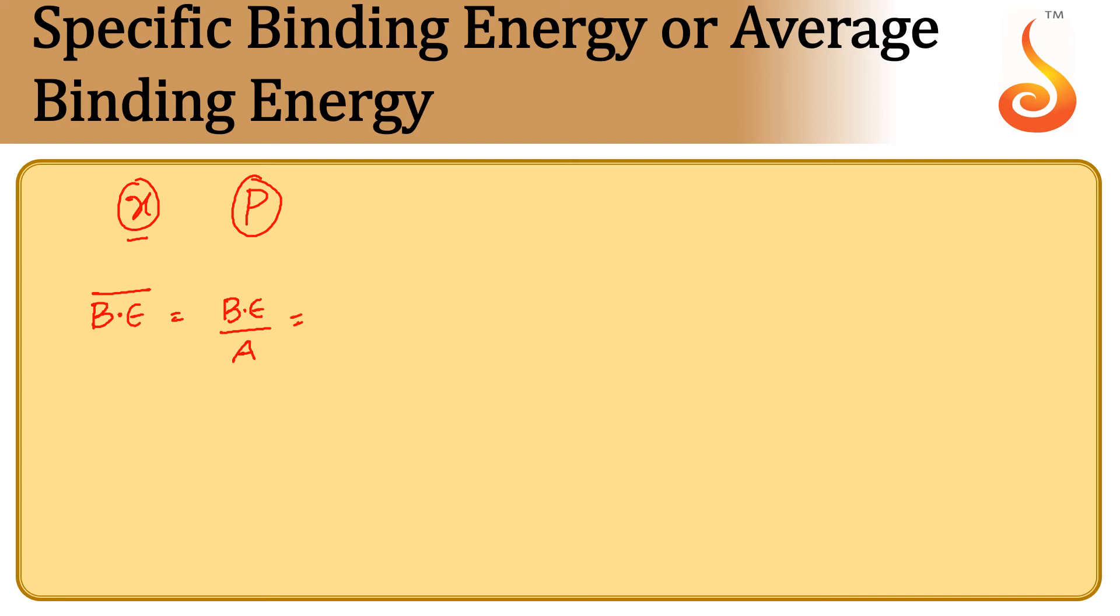So binding energy is nothing but what? Mass of the protons—total mass of protons plus total mass of neutrons in the nucleus minus the actual mass measured of the given element